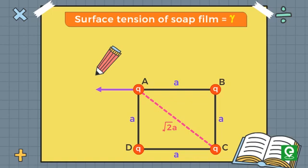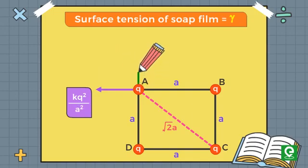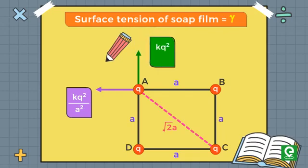F_AB is equal to K times Q squared divided by a squared. Similarly, electrostatic force on point charge A due to point charge at D, F_AD, is equal to K times Q squared divided by a squared.